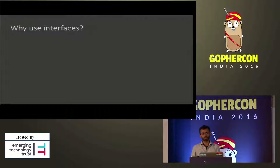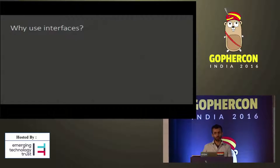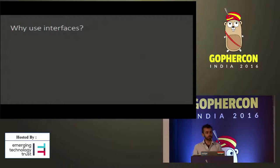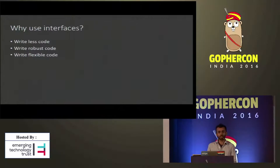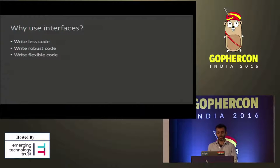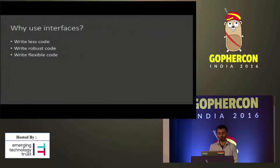But this changed once I started working on larger projects, like the Twitter client library for Go, which I maintain, and GitGo, which is a pure Go implementation of Git. I began to notice that I got three big wins from using interfaces: I could write less code and still get the job done, I could write more robust code, and my code was more flexible as well. My goal here today is to distill the lessons that I've learned about interfaces and inspire everyone here to take full advantage of the power that they give.